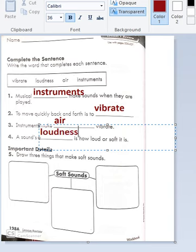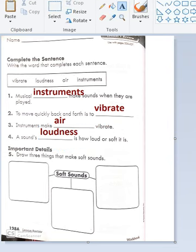Loudness. Okay, number five: Draw three things that make soft sounds. I want to draw three things that make soft sounds.